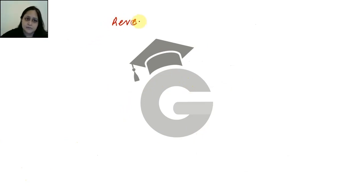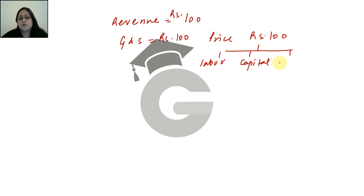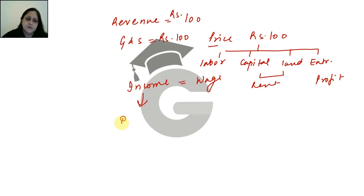So, if a firm receives revenue of Rs. 100, then the firm will make goods and services worth Rs. 100. What do we mean by goods worth Rs. 100? It means that the price is Rs. 100, and price equals income.